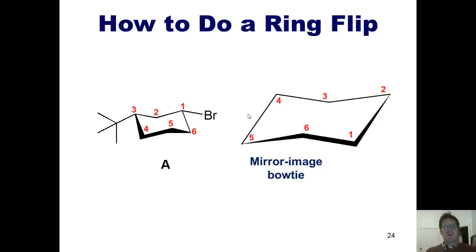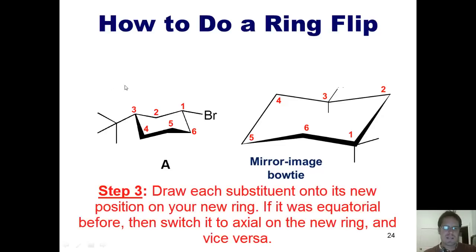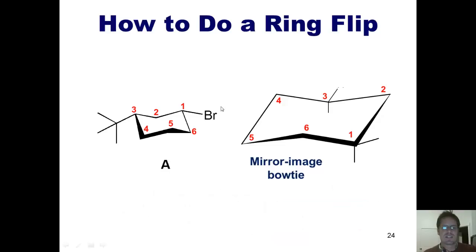In order to move on, I'm going to draw my bonds on carbons one and three until I determine which position each of these substituents go on. Now I'll move on to step three. Step three states that I'm going to put every one of my substituents in my first ring at their new position. If they were equatorial before, then I switch them to being axial in the new position in the new ring. If they were axial before, then I switch them to being equatorial in the new ring.